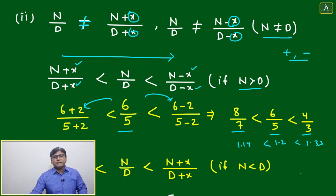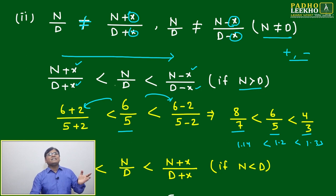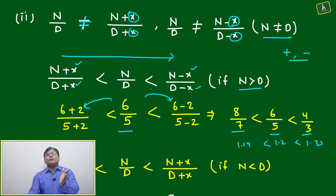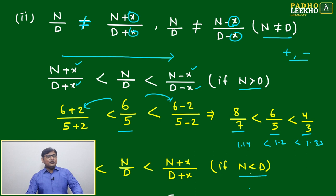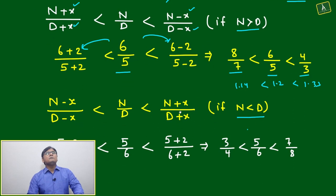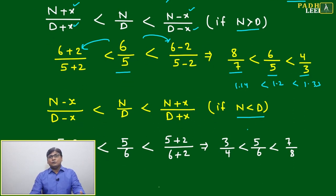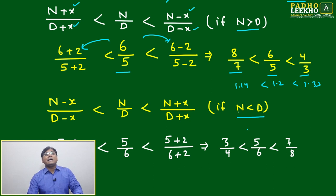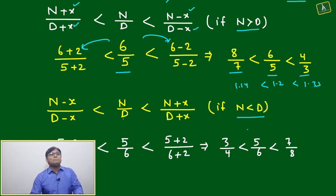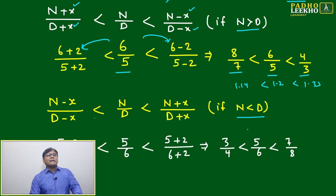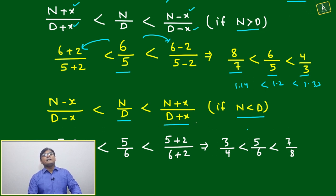So when numerator is greater than denominator, this flow is valid: adding the same number brings the ratio down, subtracting raises it. Now, if numerator is less than denominator, just the reverse is valid. It's common sense — (n − x) / (d − x) will be less than the original ratio, and that will be less than (n + x) / (d + x).